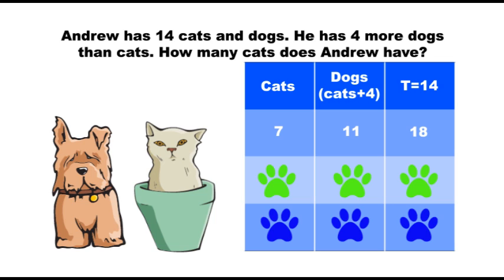Our first guess was too high, so we must choose a smaller number: 6. So if Andrew has 6 cats, he must have 10 dogs, because 6 plus 4 equals 10. And 6 cats plus 10 dogs equals 16, and our second guess is still greater than his total of 14.